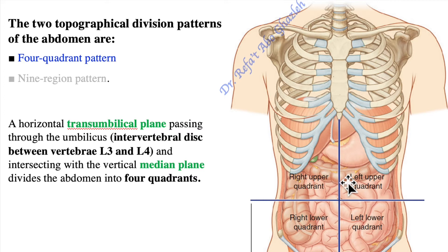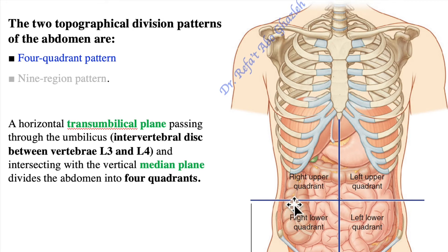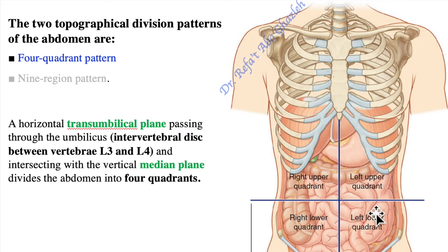The four quadrants are two on the right and two on the left. The first is the right upper quadrant — right because it is on the right side of the body, and upper because it is above the trans-umbilical plane. There is also the right lower quadrant, which is below the trans-umbilical plane.